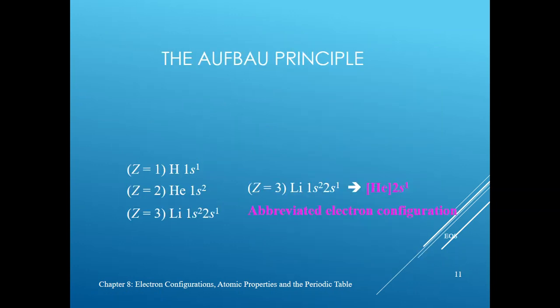The Aufbau principle is how we build up the electron configuration of an atom based on its identity. For hydrogen, which has one electron, that electron goes into the 1s orbital. The next element is helium, which has two electrons in the 1s sub-level, completely filling it. When you get to lithium and add an electron to helium's configuration, that electron goes into the next higher orbital — the 2s orbital.